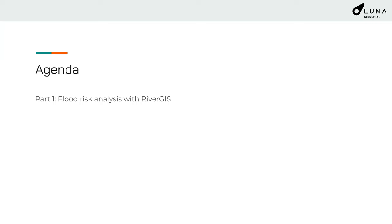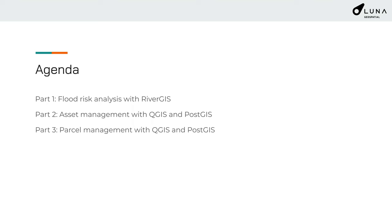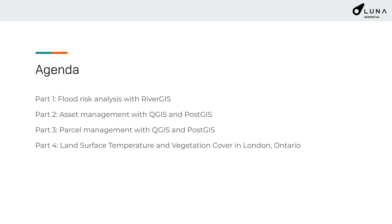The agenda: we're going to talk about flood risk analysis using an amazing plugin in QGIS called River GIS. We'll cover asset management with QGIS and PostGIS, parcel management with QGIS and PostGIS, land surface temperature and vegetation cover in London, Ontario — I'm from London, Ontario — the greenest roads in London, and income and access to green spaces in London, Ontario.